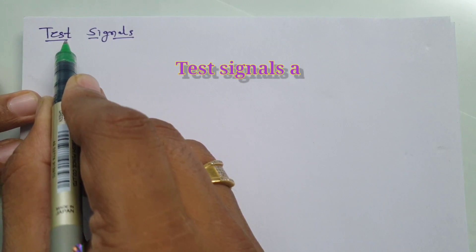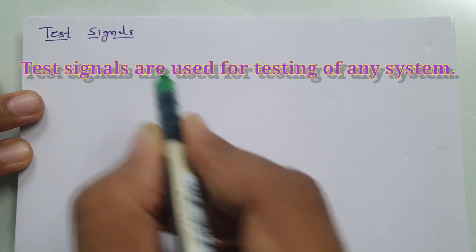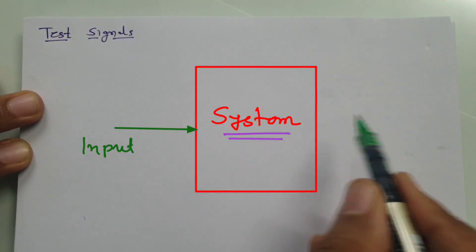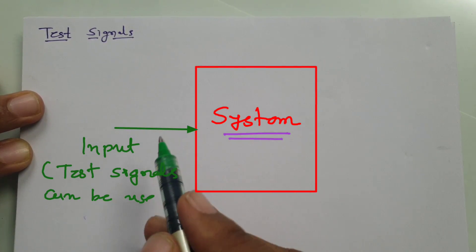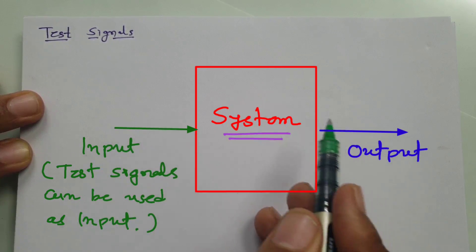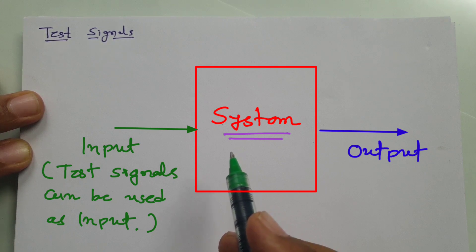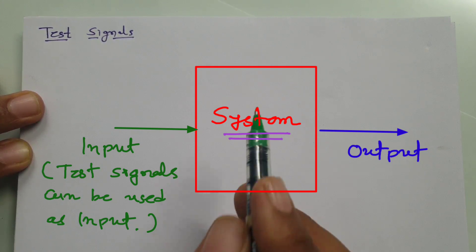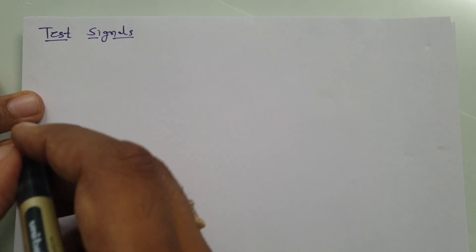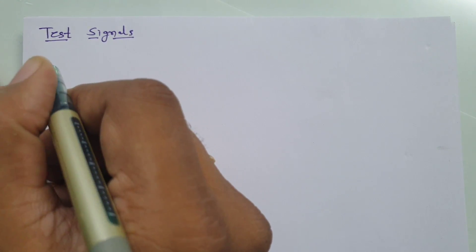Test signals are used for testing of any system. For example, if you have one system with input and output, then with respect to a test signal as input, we observe how the output behaves with the system. That is what we are trying to test. So let us try to understand first how many test signals are available in control engineering.